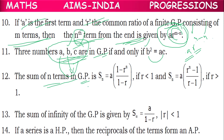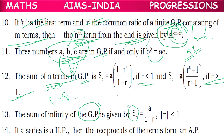The sum of n terms of a GP is: Sn = a(1 − rⁿ)/(1 − r) when r < 1, and Sn = a(rⁿ − 1)/(r − 1) when r > 1. For the sum of an infinite GP — when it goes on up to infinity — the formula is S∞ = a/(1 − r), where the modulus of r must be less than 1. If |r| ≥ 1, this formula is not applicable.